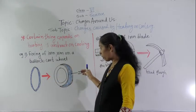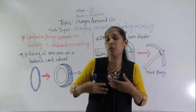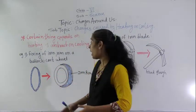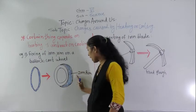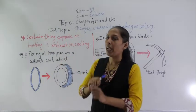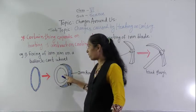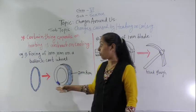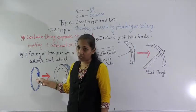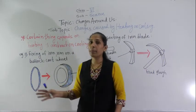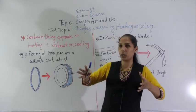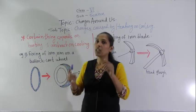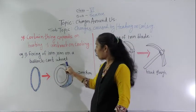Once it is fixed properly, the iron smith pours water over it. Because of the water, the iron rim contracts and gets fixed properly on the bullock cart wheel. First, heat was provided to expand the rim, and expansion increased its size so it could easily fit.